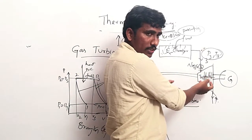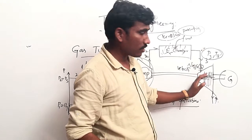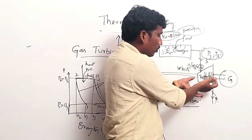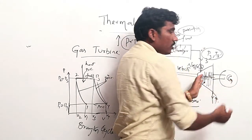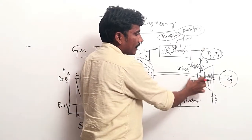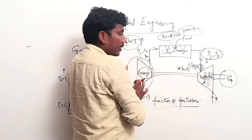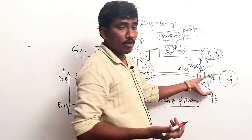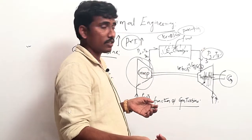The nozzle increases velocity by decreasing pressure energy. Due to that velocity, the high-pressure gas expands onto the turbine blades. When the turbine blades rotate, the rotor of the turbine also rotates, and we take that power out and connect it to a generator to produce power. However, here a common shaft connects the compressor and turbine, so whatever power is developed in the turbine is used to run the compressor — this is the main drawback of the gas turbine, resulting in lower efficiency.